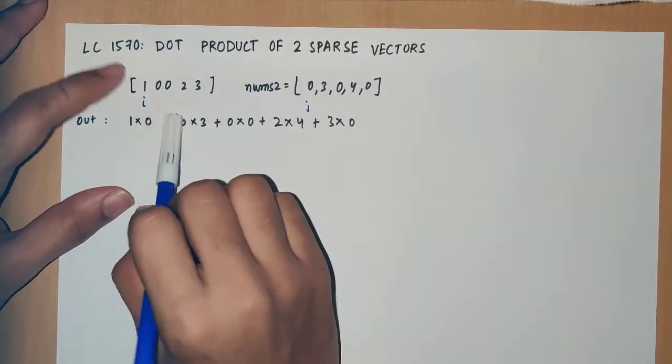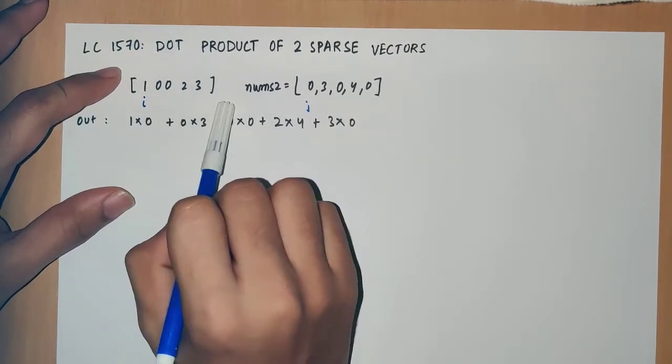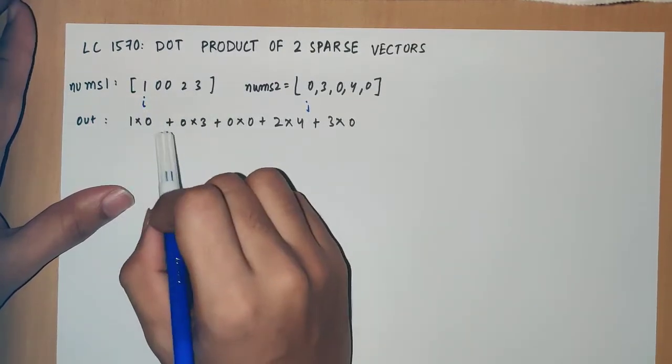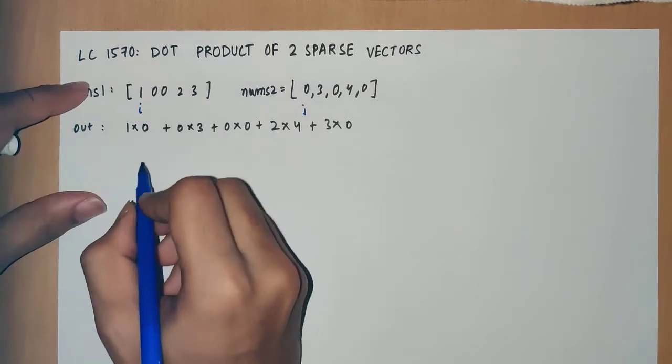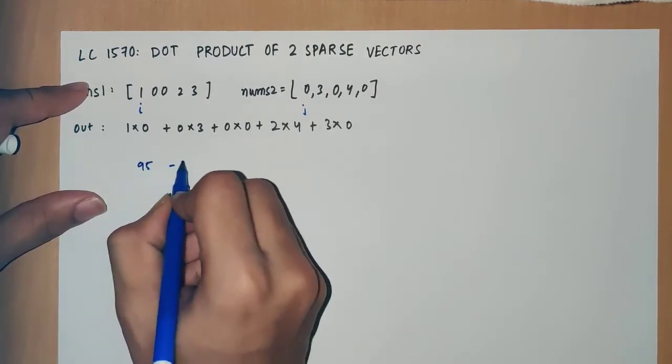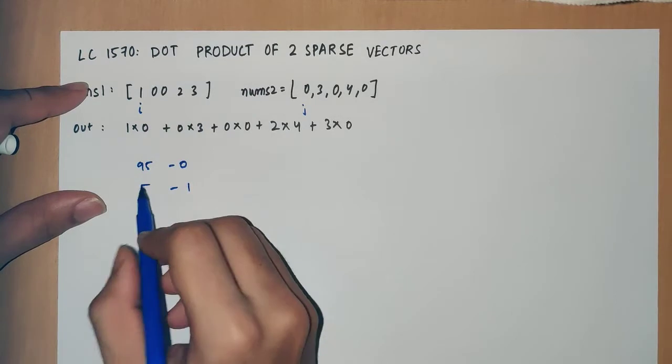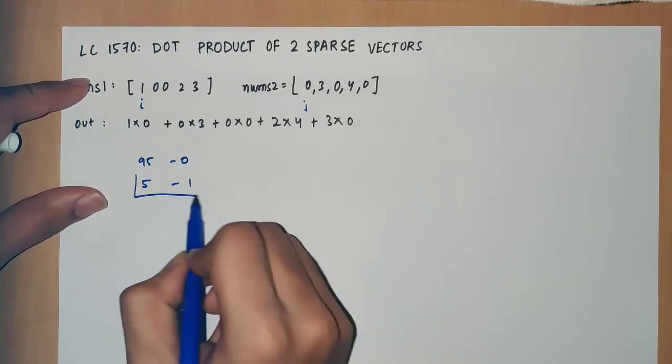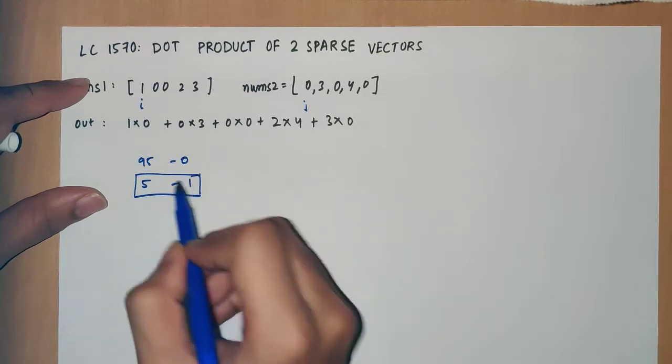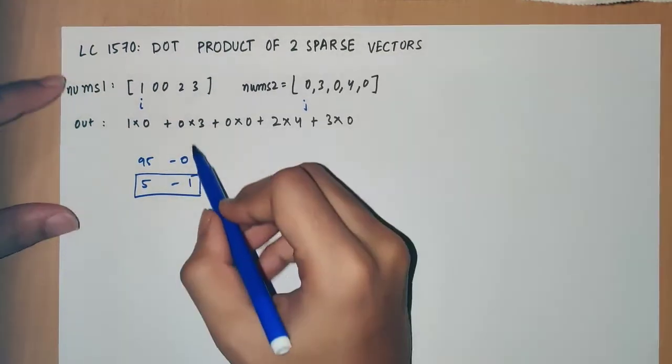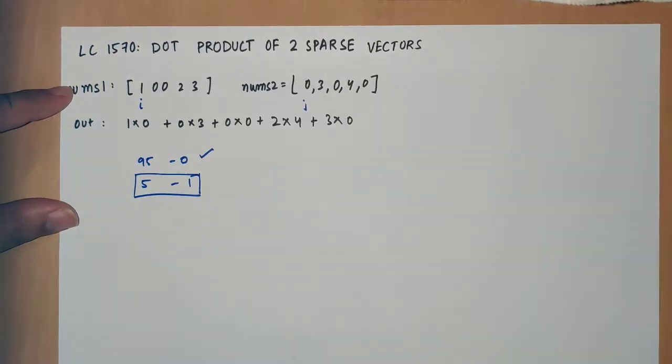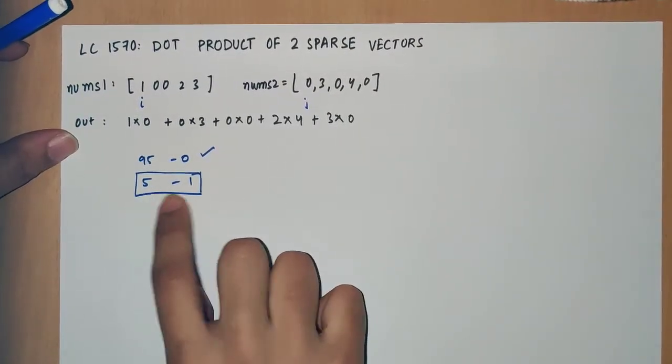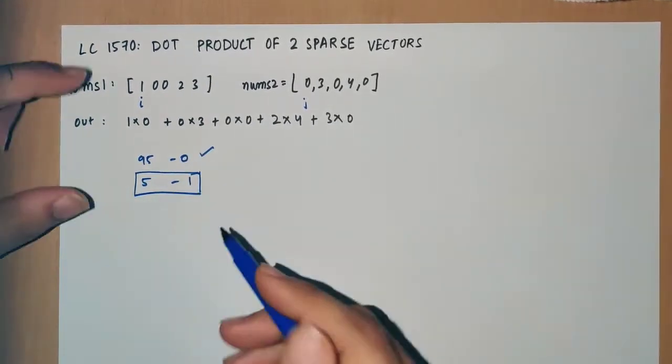Suppose it has 95 zero values and only 5 nonzero values. If we store only the nonzero values, it will be only 5 amount of spaces needed. We can ignore all the 95 zeros. The next question is how to store all these nonzero values.